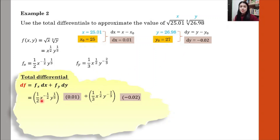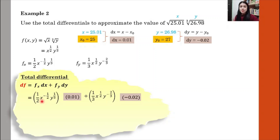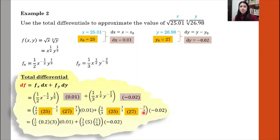Now substitute x₀ equals 25 and y₀ equals 27 for x and y respectively. Simplify and you will have the answer df equal to approximately negative 0.0007. We do not stop here because we still need to approximate the value, so we continue to the next step.